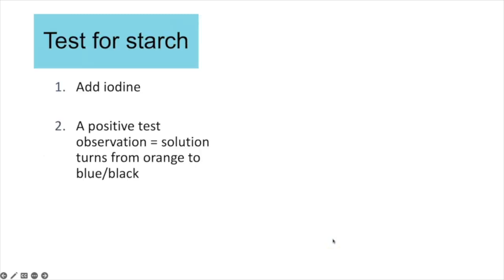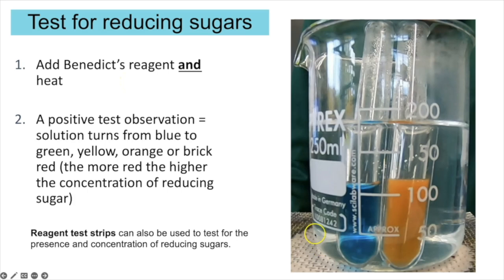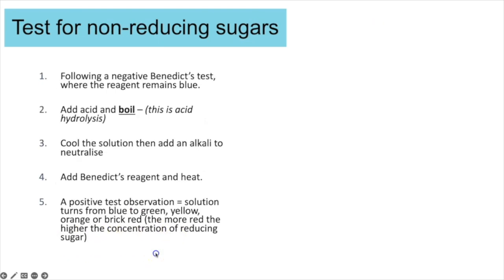For several biological molecules you need to know the chemical tests for their presence. For starch, add iodine (reddish-brown) — a positive result turns blue-black. For reducing sugars, add Benedict's reagent (bright blue) and heat — a positive result shows colour changes from green to yellow to orange to brick red; the darker the red, the higher the concentration of reducing sugar. Reagent test strips can also be used to test for reducing sugars.